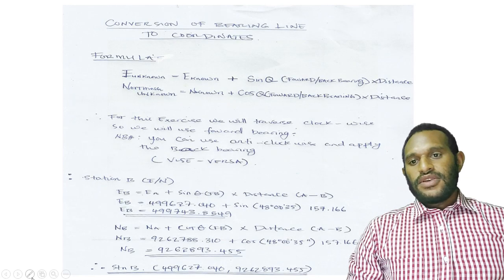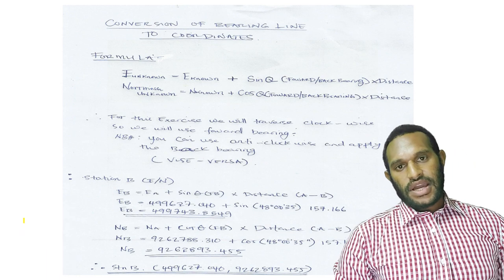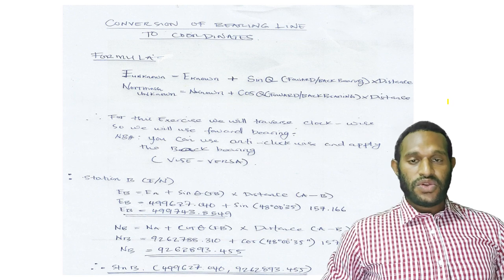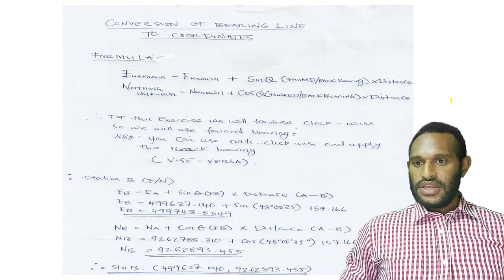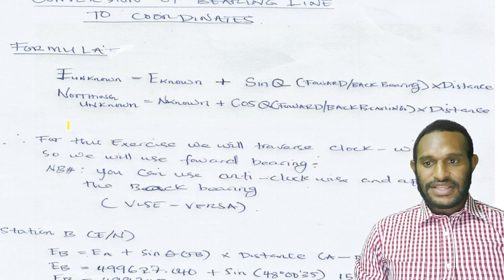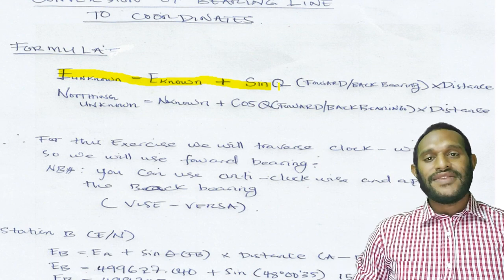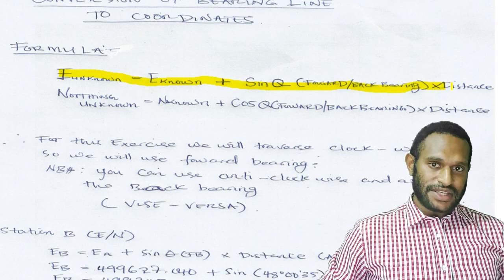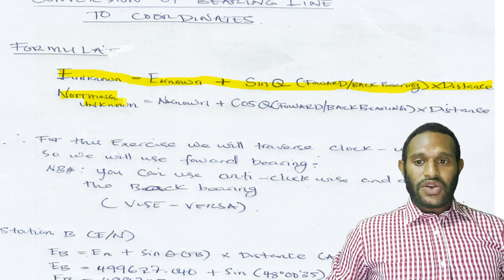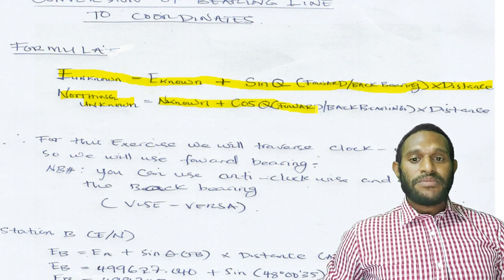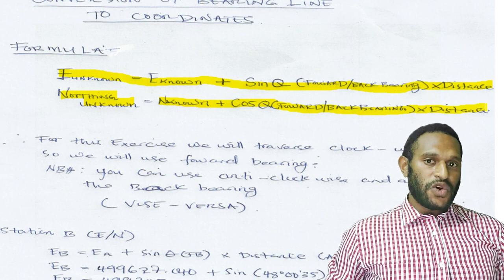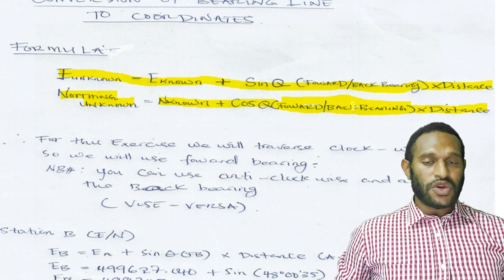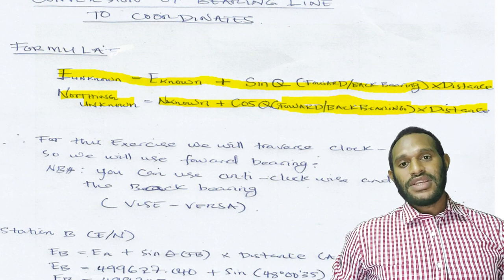As shown in front of you is the conversion of bearing lines to coordinate calculations. The formula is: eastings of the unknown is equivalent to eastings of the known, plus sine theta of the forward bearing (if going clockwise), or the back bearing (if going anti-clockwise), multiplied by the distance. For northings: northings unknown equals northings known, plus cosine theta of the forward or back bearing, multiplied by the distance. If using the forward bearing, use it all the way until you close back to the starting point; similarly for the back bearing.